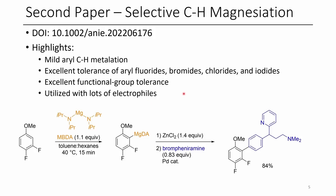The second paper is the C–H magnesiation of various aryl and heteroaryl compounds, and this is a really cool paper — almost as cool as the epinine paper from last episode. In this reaction, where you might typically expect Grignard reagents to be formed from aryl halides, the authors instead prepare an LDA analog — magnesium bis-diisopropyl amide — getting highly selective C–H magnesiation rather than the typical halide insertion. This works in the presence of aryl fluorides, aryl bromides, and aryl iodides.